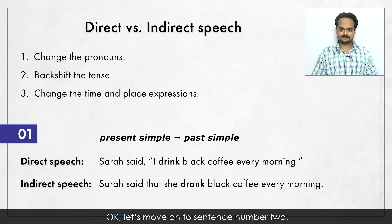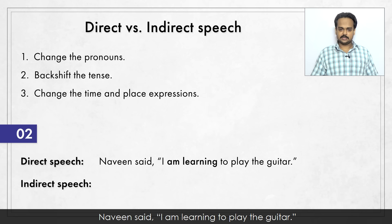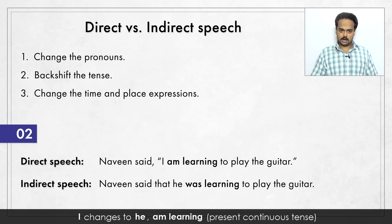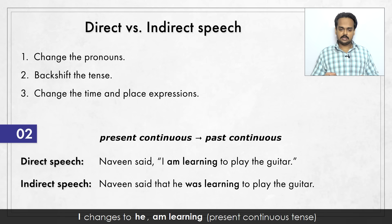Let's move on to sentence number two. Naveen said, "I am learning to play the guitar." Naveen said that he was learning to play the guitar. "I" changes to "he". "Am learning" – present continuous tense – changes to "was learning" – past continuous.